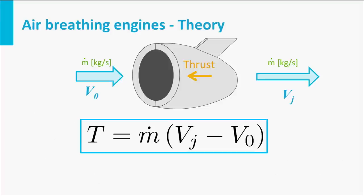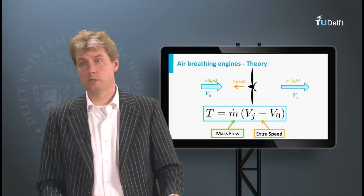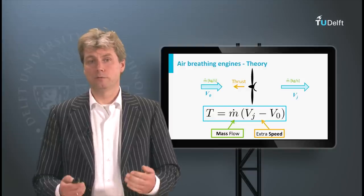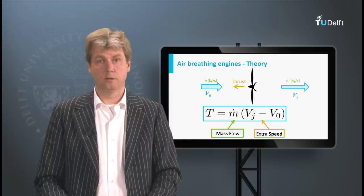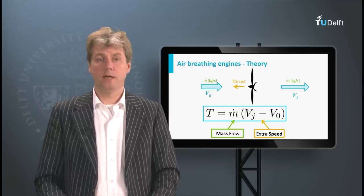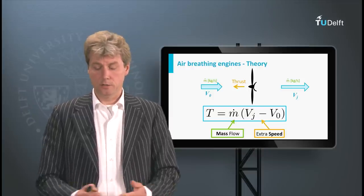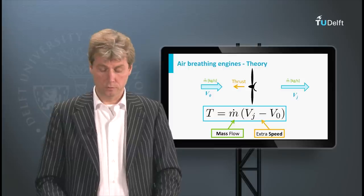Remember the water rocket — you see the same two principles here: mass flow and the speed change indicated by the second part of the equation. Even though these drawings show a jet engine, the same goes for a propeller engine — it is simply the speed change between the air before it enters the propeller and when it leaves the propeller surface. This is the basic principle for any air-breathing engine using reaction propulsion to create a thrust force.